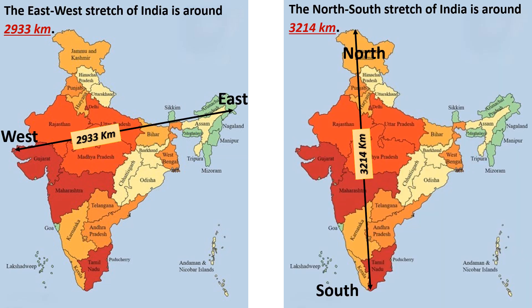The East-West stretch of India is around 2,933 km and the North-South stretch of India is approximately 3,214 km. The East-West stretch is smaller than the North-South stretch.